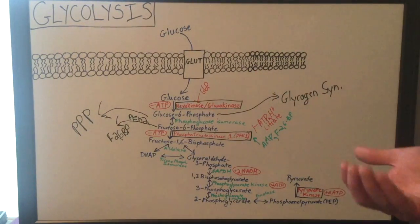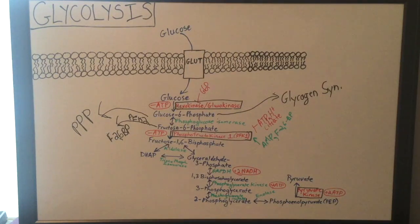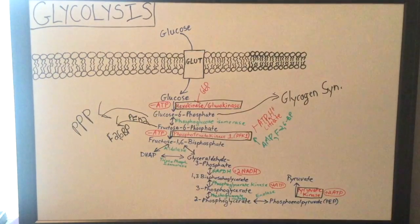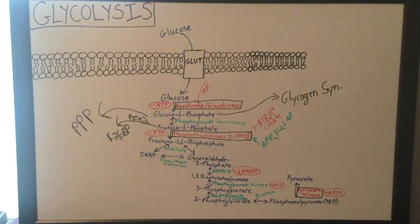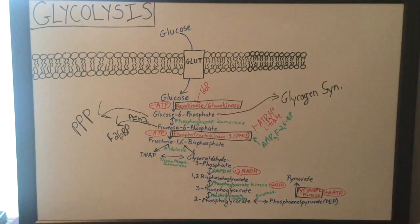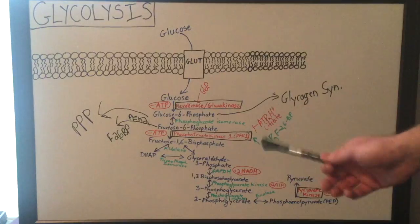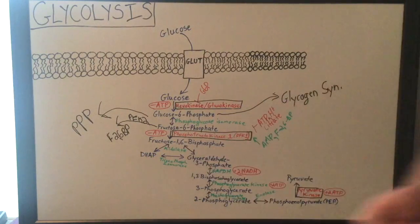Once the cell gets to fructose 1,6-bisphosphate, the cell will actually chop it up into glyceraldehyde 3-phosphate and DHAP (dihydroxyacetone phosphate) via the enzyme aldolase. Aldolase will chop up fructose 1,6-bisphosphate into DHAP and glyceraldehyde 3-phosphate. This is a reversible step, but typically this reaction will just drive forward. The pathway will only go forward utilizing glyceraldehyde 3-phosphate, so DHAP will actually have to be converted into glyceraldehyde 3-phosphate via the enzyme triose-phosphate isomerase.